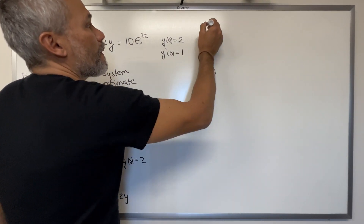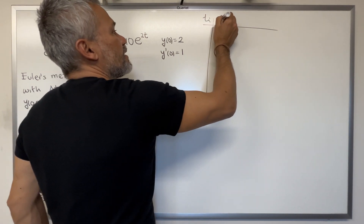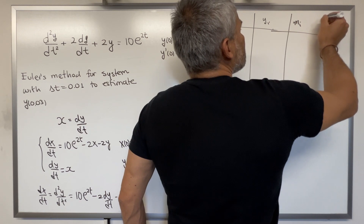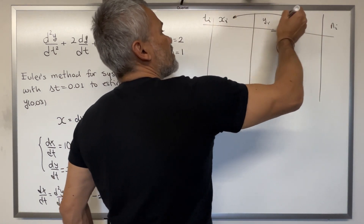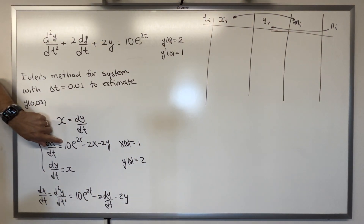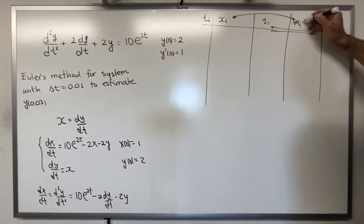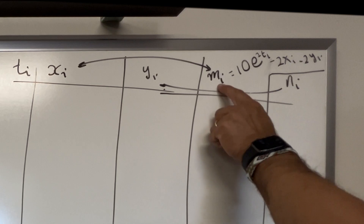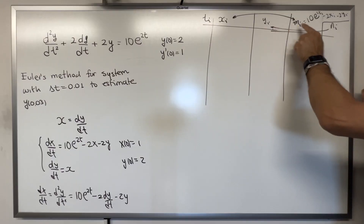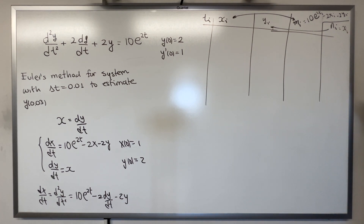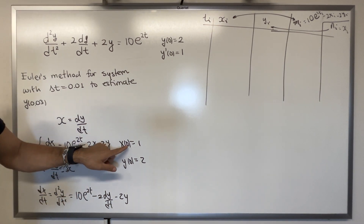We set up a table with columns for t, x, y, m₂ᵢ, and n₂ᵢ. The m₂ᵢ corresponds to dx/dt and equals 10e^(2t) − 2xᵢ − 2yᵢ. The n₂ᵢ corresponds to dy/dt and is simply xᵢ.